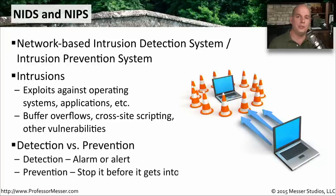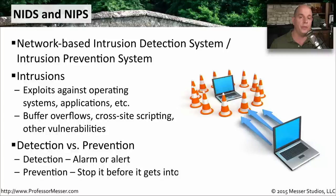Although the functionality is similar between an intrusion detection system and an intrusion prevention system, the ultimate goal is different. An intrusion detection system can identify vulnerabilities, buffer overflows, and database injections coming through the network, but it can only identify them and alert you. An intrusion prevention system can actually stop the threat before it traverses the network — that's the key difference between detection and prevention.